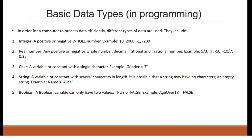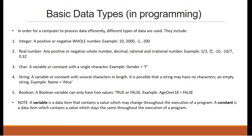Note: a variable is a data item that contains a value which may change throughout the execution of a program. A constant, on the other hand, is a data item which contains a value which stays the same throughout the execution of a program.